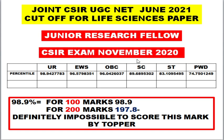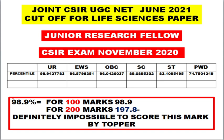So for November 2020 and June 2020, you need to compare results where the cutoff was released in percentile. Many students are confused, thinking 98.94 is a percentage. If it were a percentage, a student would need to score 197.8 out of 200, which is impossible. Even toppers in the life sciences exam score around 160 to 170 marks maximum.